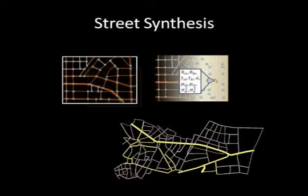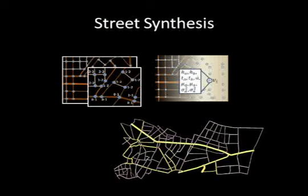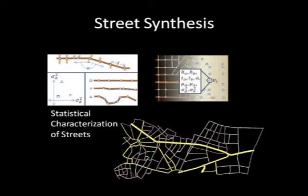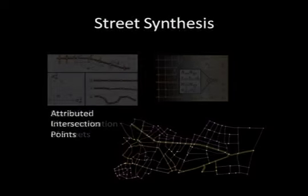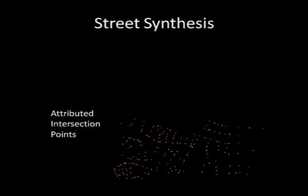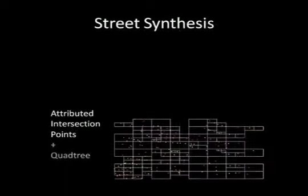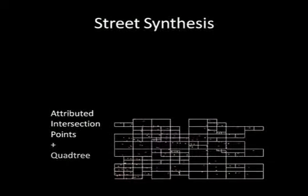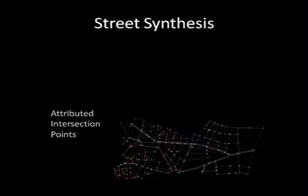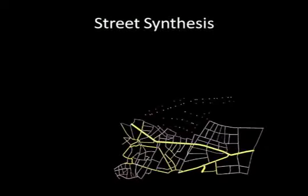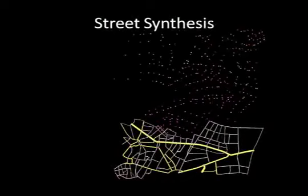The attributes stored in the intersection points include the hierarchical level and several other geometric attributes. We organize the attributed points of each example fragment into an adaptive spatial data structure, which facilitates their manipulation during our example-based synthesis.